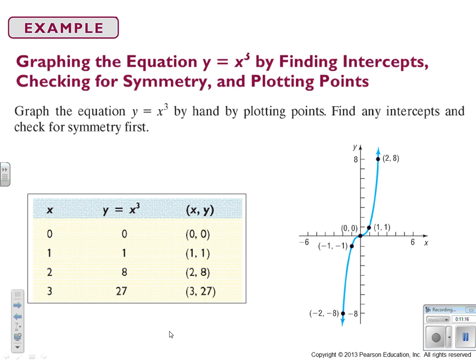If I were to plug in negative 1, I'd get out negative 1, negative 2, and negative 8. So here, if you look, this is the first quadrant and the third quadrant. So the rule of origin symmetry, where it'll appear in diagonal quadrants, is true for this function.